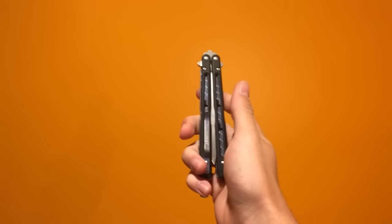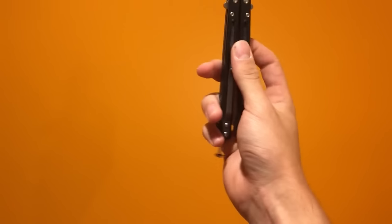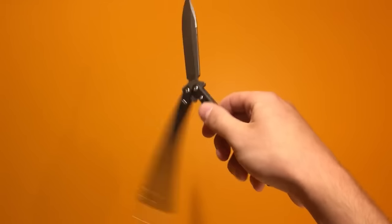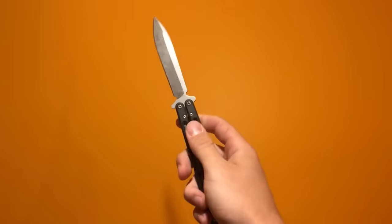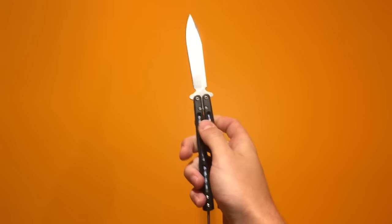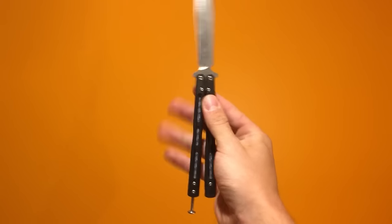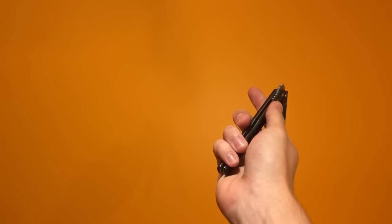So here we go into the tutorial. To start off, you do this one with the safe handle. You can do it starting either open or closed. I'm gonna start open just to make it easier. What you want to do is start with it open, grab the safe handle, and flip the knife over the back of your hand.